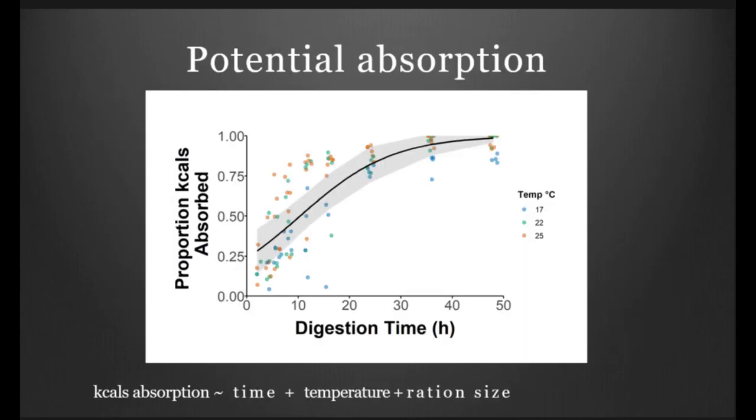Once again, we have digestion time on the x-axis here, and then the proportion of kilocalories absorbed now. This is for both the stomach and the intestines, because it was hard to differentiate that digestion that was occurring through time. We just went ahead and combined it all. We were looking at the potential absorption through time. We found that temperature was not significantly impacting our treatments here. We didn't see a difference between our treatments as far as the gross absorption that was occurring.